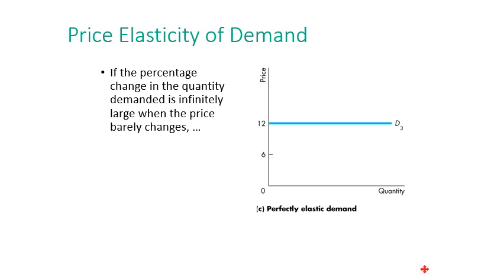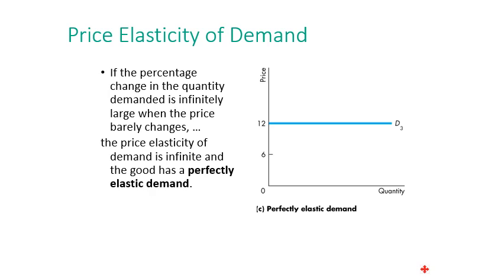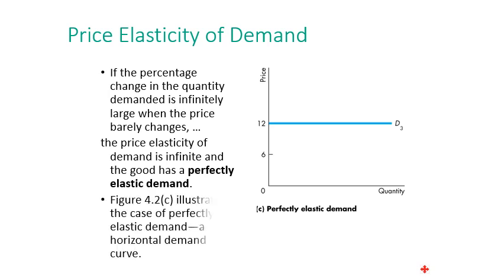Elastic demand has a price elasticity greater than 1 — the demand curve is relatively flat. If the percentage change in quantity demanded is infinitely large when the price barely changes, we call this perfectly elastic demand — the opposite of perfectly inelastic demand. The price elasticity of demand is infinite and the demand curve is a horizontal line.